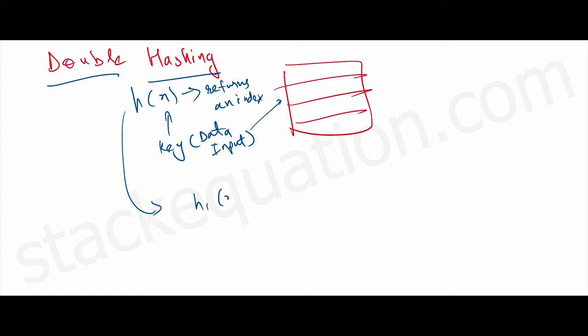Let's say h1(x) and h2(x) are two standard hash functions which return an index for a key. We combine these two functions to form another standard function for double hashing with a parameter i.